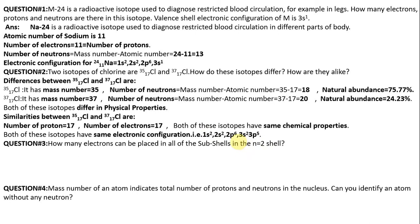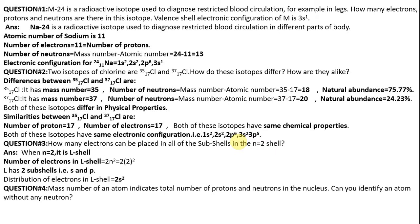How many electrons are placed in all of the subshells when n equals 2? If n equals 2, it is the L-shell. The number of electrons in the shell is calculated by the formula 2n squared. We put n equals 2 and we get 8 electrons. The distribution of electrons in the L-shell subshells is 2s2 and 2p6.